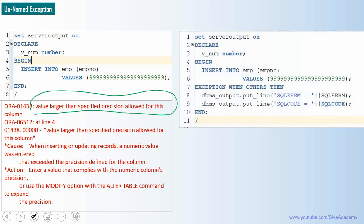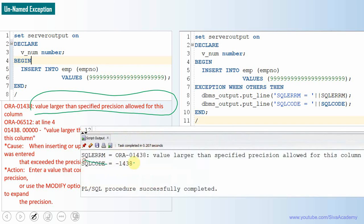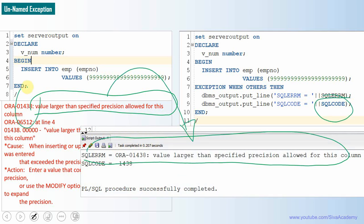Otherwise, we can use the others category. So in the others category, exactly like the previous example, we can use the SQLERRM to capture the description. That is in this case, SQLERRM will return the description. Same way SQLCODE will get us the code of this. So in this case, it is minus 1438. So this is an example for unnamed exception category.